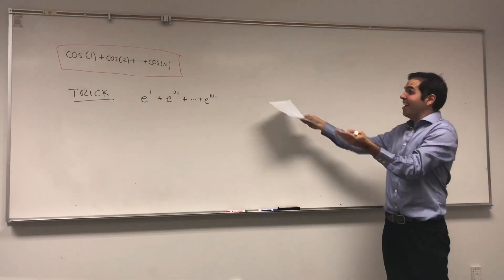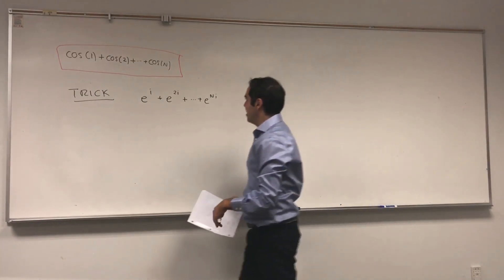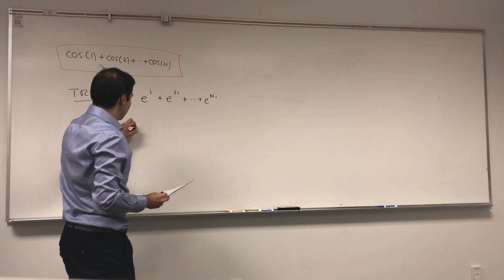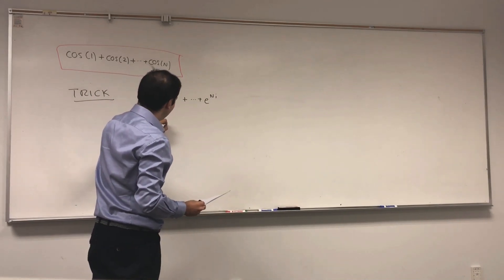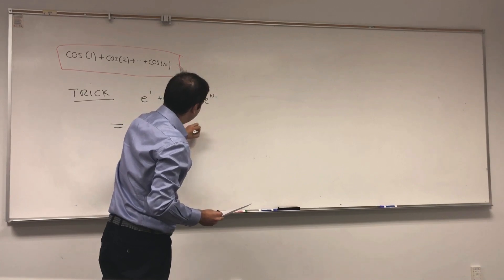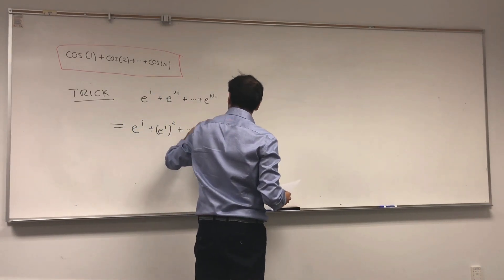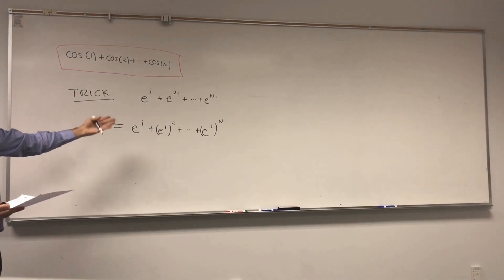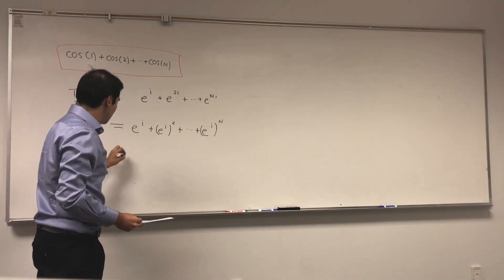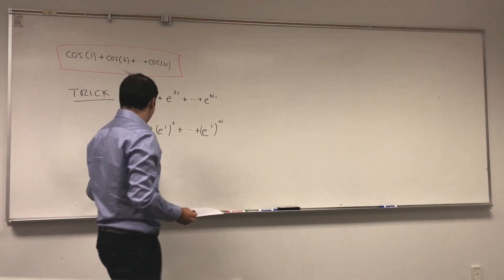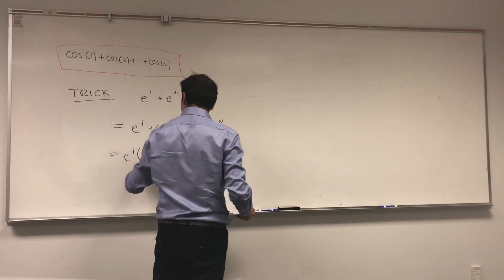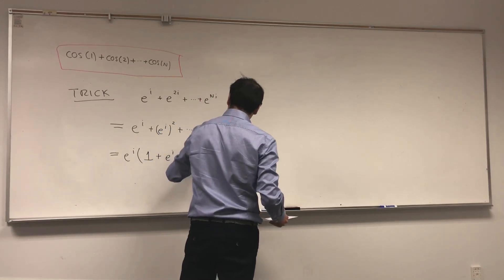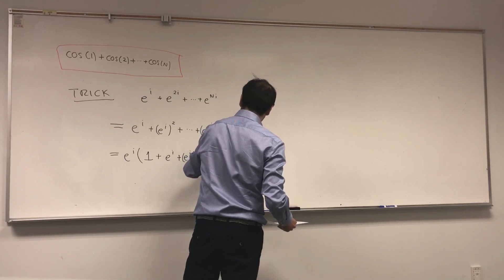I'll explain later why this is indeed the complex version. But even though this is hard to evaluate, this is much easier to evaluate because this is e to the i, e to the i squared, plus dot dot dot, plus e to the i to the n. And you may notice this looks almost like a geometric series, but usually geometric series start with one. So let's factor out an e to the i: it's e to the i times one plus e to the i plus e to the i squared plus dot dot dot plus e to the i to the n minus one.